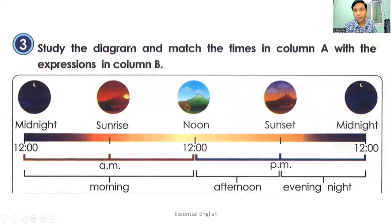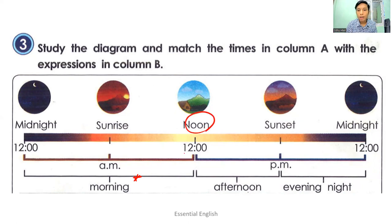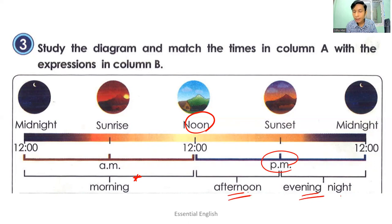Exercise 3: Study the diagram and match the times in column A with the expressions in column B. You have to study the times: midnight, sunrise, noon, sunset, midnight. From 12 o'clock to 12 o'clock, this is A.M. — it's in the morning. After 12 o'clock noon through sunset to midnight, this is P.M. — it's in the afternoon, evening, and night.